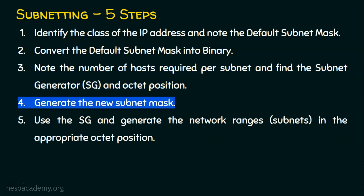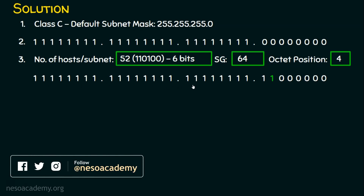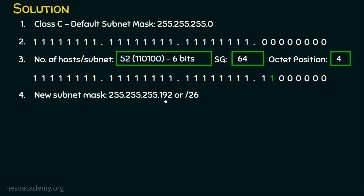Step number four is to generate the new subnet mask. We already generated it — the first three octets are all ones, which equals 255. In the fourth octet, the first two bits are one: 128 plus 64 equals 192. So the new subnet mask is 255.255.255.192. In slash notation, counting all ones — 8 + 8 + 8 + 2 = 26 ones — it can also be written as /26.